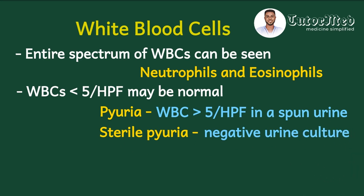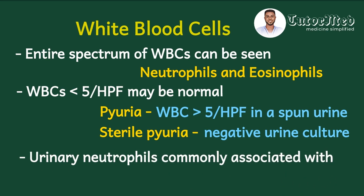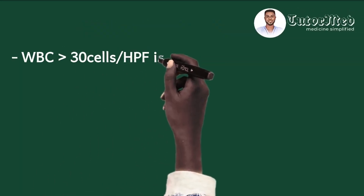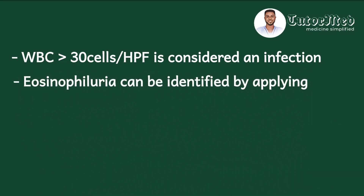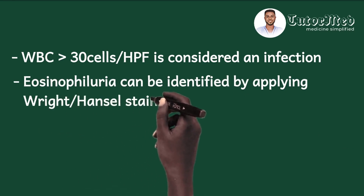It is important to note that urinary neutrophils are commonly associated with bacteriuria — once you see neutrophils, you will most likely also see bacteria when examining the microorganisms. A WBC count of more than 30 per high power field is considered to be from an infectious process. Routinely we do not stain the sediment, however to identify eosinophils in urine — eosinophiluria — we need to stain the sample with Wright or Hansel stain.